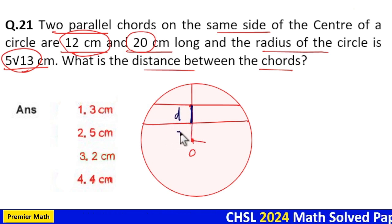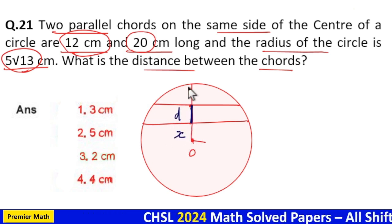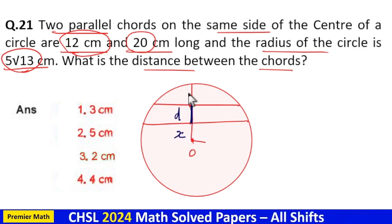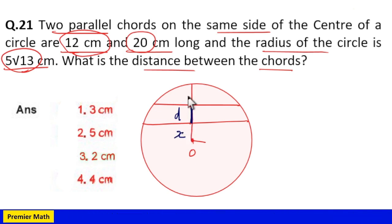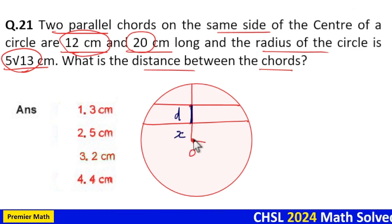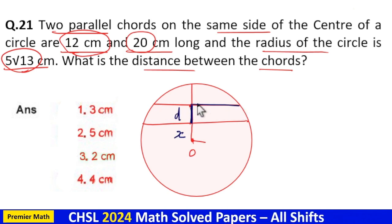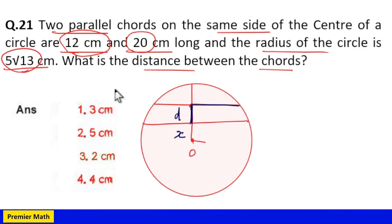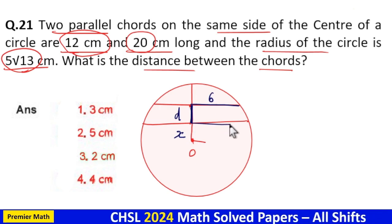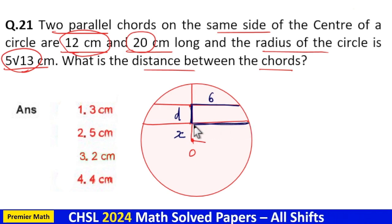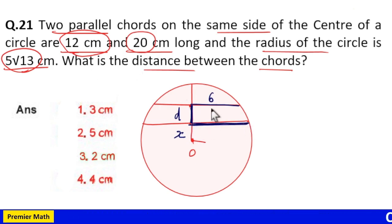Now we have x here. The total radius is 5√13 cm. The half-length of the 12 cm chord is 6, and the half-length of the 20 cm chord is 10.